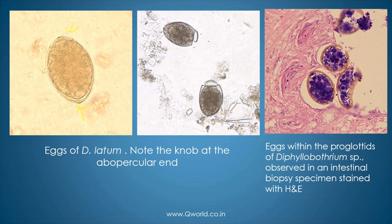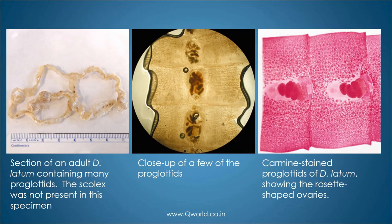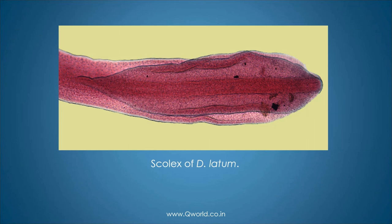As you can see on the image, there is the operculum opening up to release the contents. You can see the D. latum worm containing so many segments — the proglottids — with the central coiled uterus and the rosette-shaped ovaries shown. The scolex, as you can see, has two lips — and that is why it is known as Diphyllobothrium, meaning two bothria.